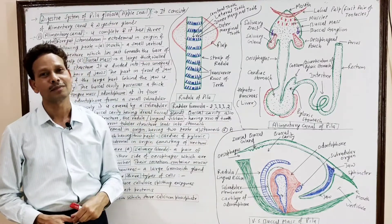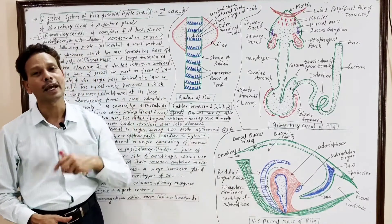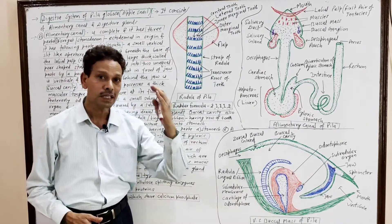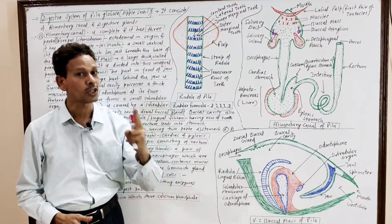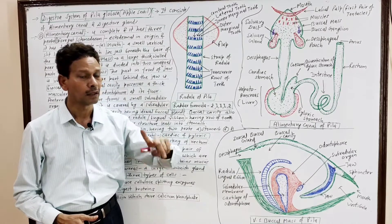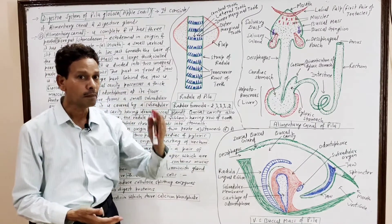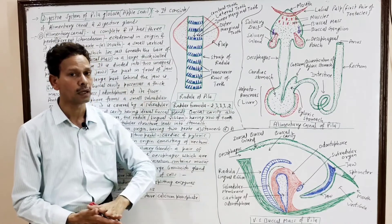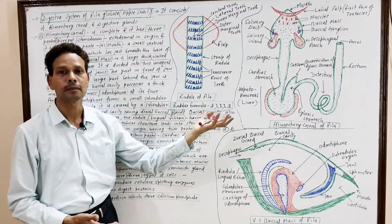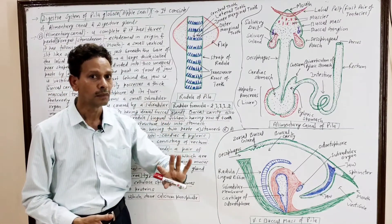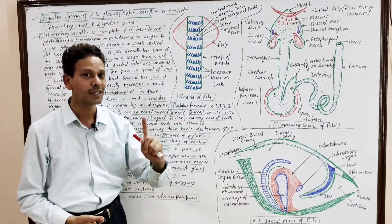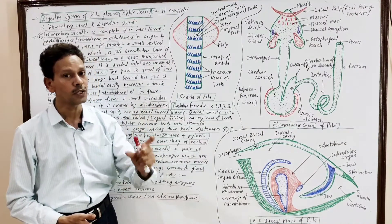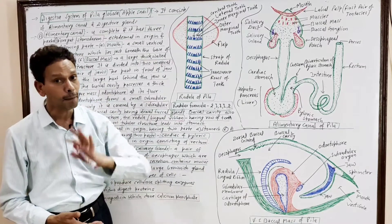It is a mollusk — a soft-bodied animal, Pila globosa, the apple snail. All BSc first-year, second-semester students, note that in phylum Annelida the type study is earthworm; in phylum Arthropoda the type study is cockroach; in phylum Mollusca the type study is Pila globosa, the apple snail; and in phylum Echinodermata the type study is starfish. In today's lecture we will discuss the digestive system of Pila globosa, the apple snail, a mollusk.